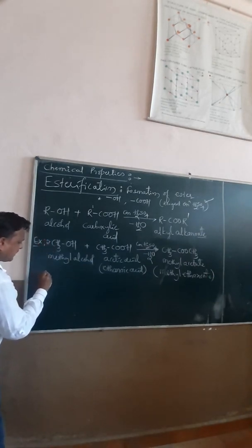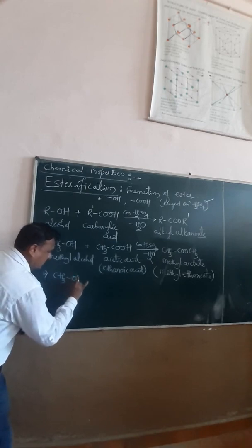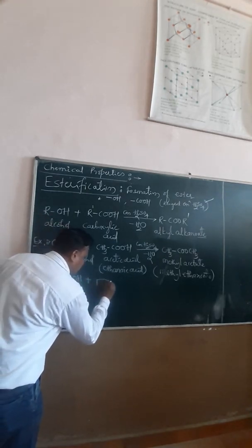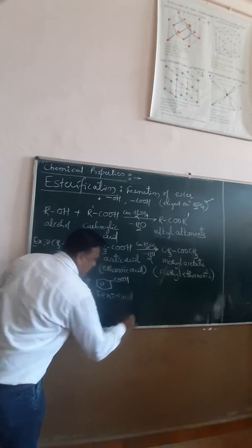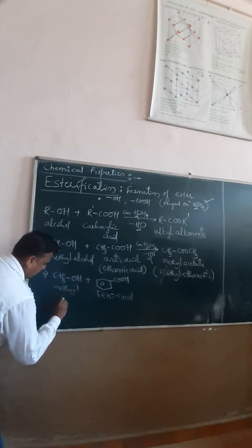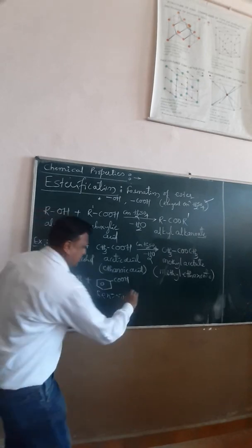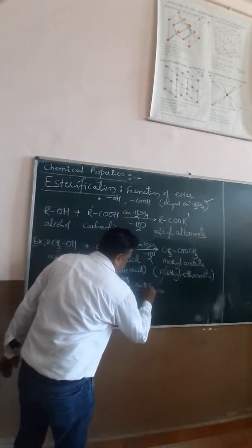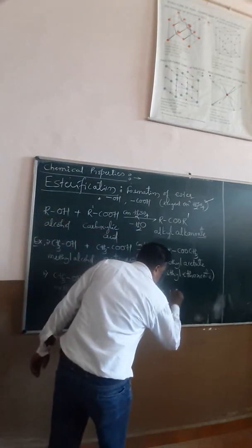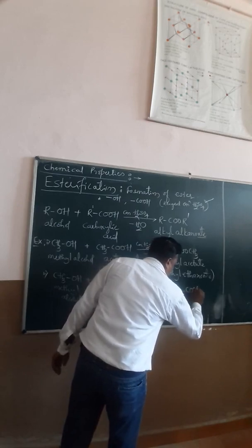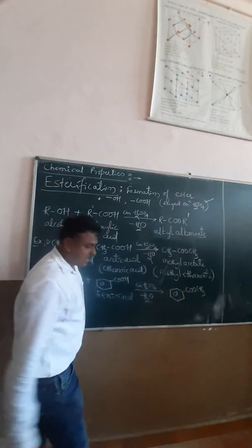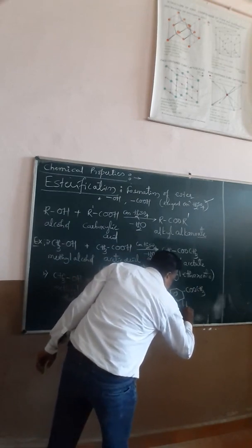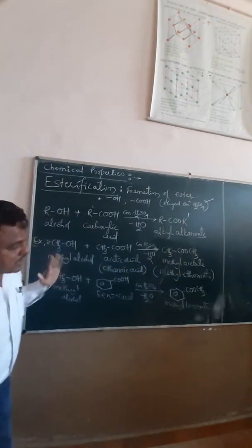Consider another example using the same methyl alcohol. If we use an aromatic acid — benzoic acid (benzene ring with COOH) — methyl alcohol reacts with benzoic acid in the presence of concentrated sulphuric acid, which removes water due to its dehydrating property. The product is benzene-COOCH₃. Using the IUPAC nomenclature: alcohol is named first, then the acid, so the name is methyl benzoate.